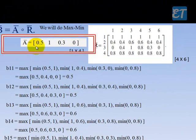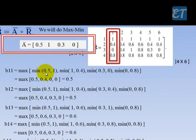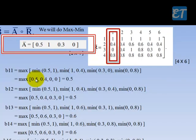We will be considering this row and this column. Taking the minimum of 0.5 and 1, the minimum of 1 and 0.4, of 0.3 and 0.0, and of 0 and 0.8. The minimums are 0.5, 0.4, 0, and 0.